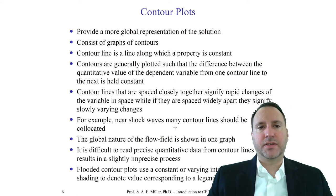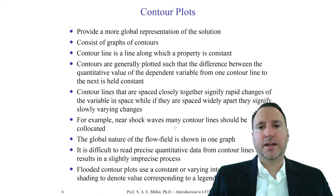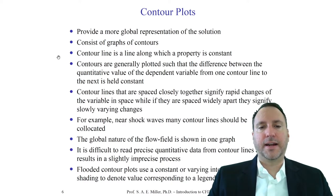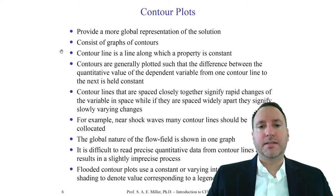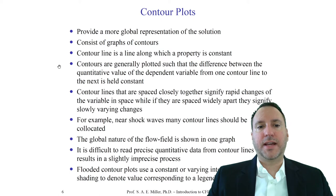Contour plots essentially consist of a graph of contours — simply lines that are labeled, or colors or a spectrum of color which you can usually choose in your visualization system. You can make it black and white or go from red to yellow or red to green. Usually, contour lines are lines along which a property is constant, and the same applies to color gradients. This is just like an elevation map that many people learn to read in elementary or middle school. Contours are generally plotted so that the difference between quantitative values from one contour to the next is held constant — for example, 0.1, 0.2, 0.3, 0.4, etc.